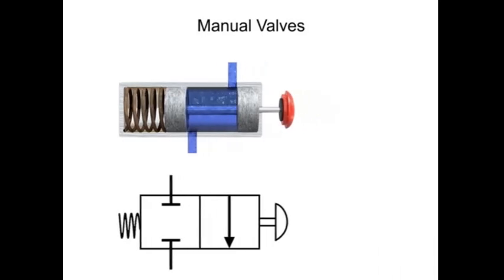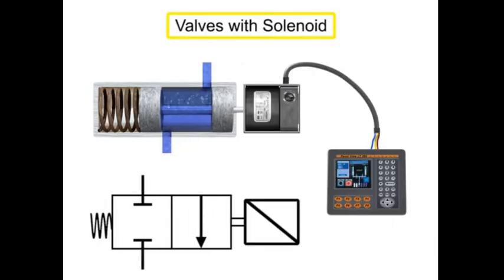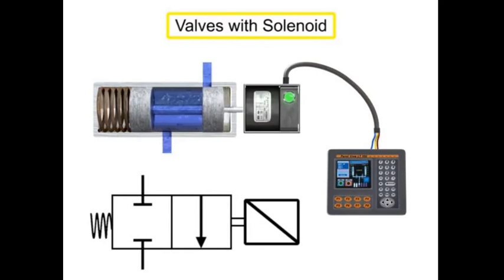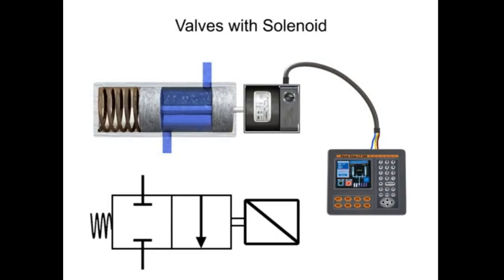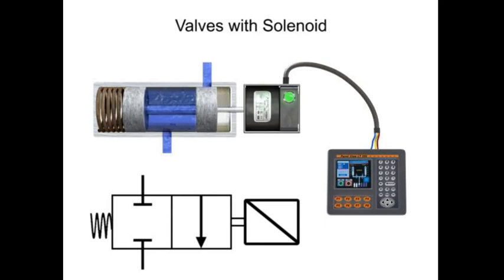By contrast, valves with a solenoid actuator respond to an electrical signal for shifting. With electrical control, machine cycles can be set up for automatic sequencing and operator control can be exercised from a remote location.